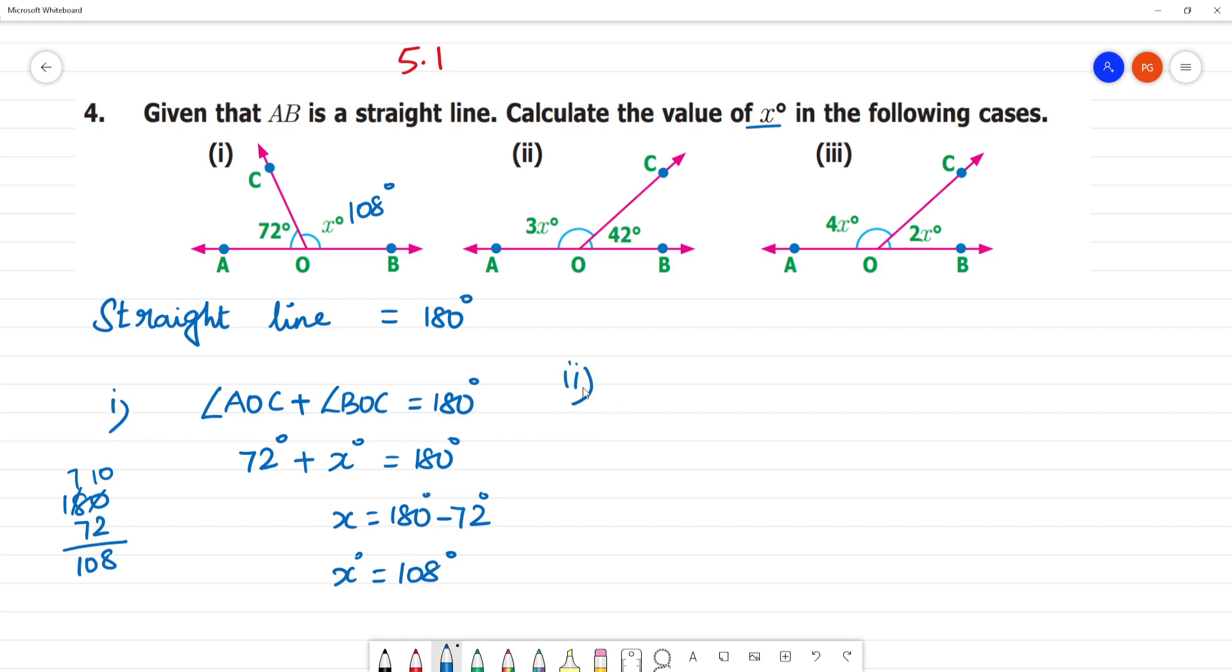Now we will see the second one. In the same way, angle AOC plus angle BOC forms a straight line AB, that angle equals 180 degrees. Angle AOC is 3x plus angle BOC which is 42 equals 180 degrees.